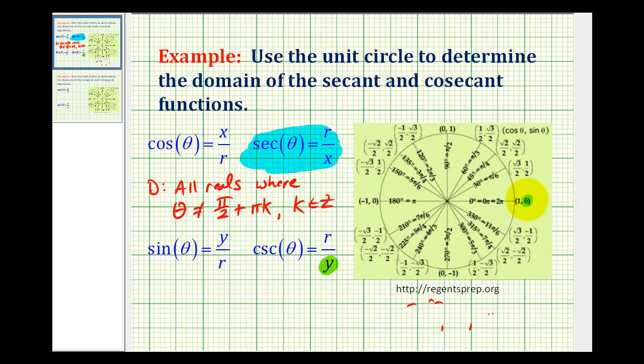And the y coordinate would be zero here and here, meaning we must exclude the angles that have a terminal side here and here. Again, let's go ahead and just start listing them. We'd have zero radians,